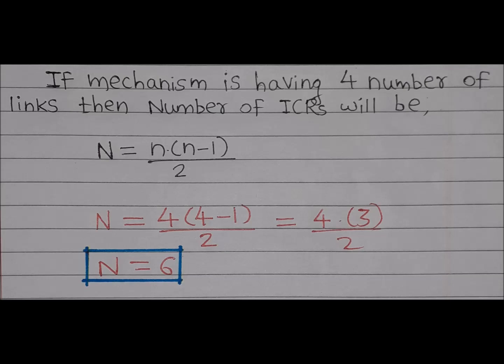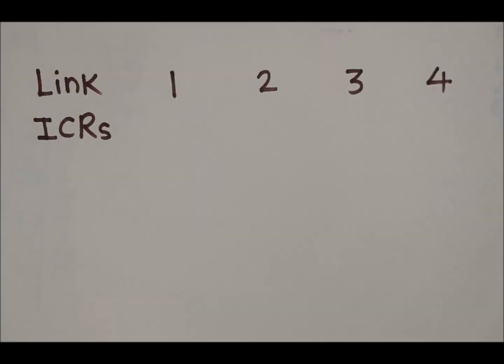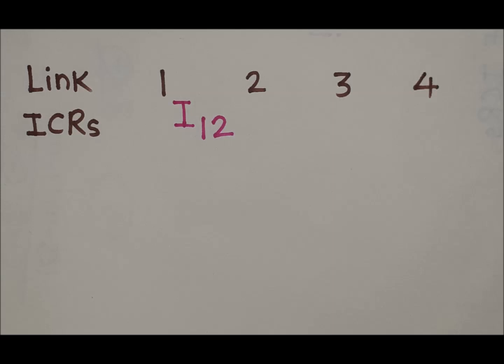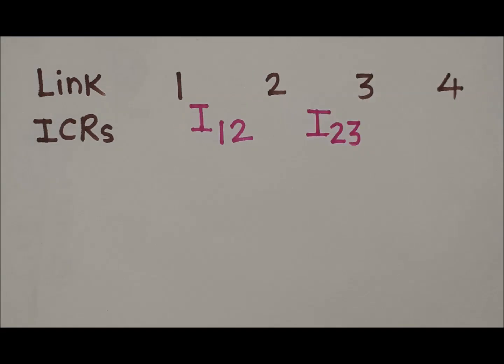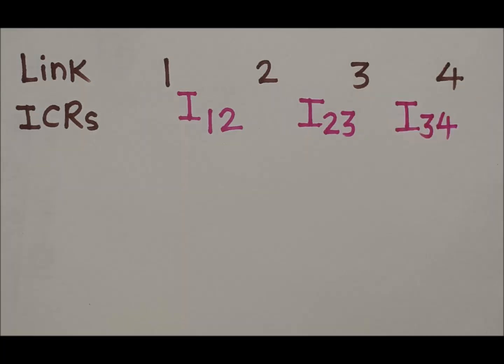Now, how to write these six ICRs? In the first row we write the link numbers — since there are four links, we write 1, 2, 3, and 4. In the next row, between 1 and 2 we write I12 (the ICR for relative motion between link 1 and 2). Similarly, between 2 and 3 we write I23, and between 3 and 4 we write I34.